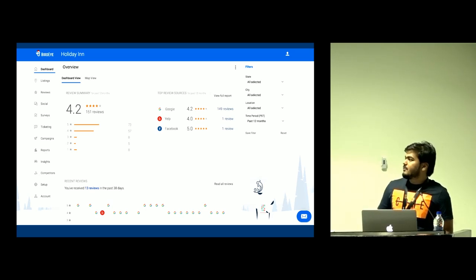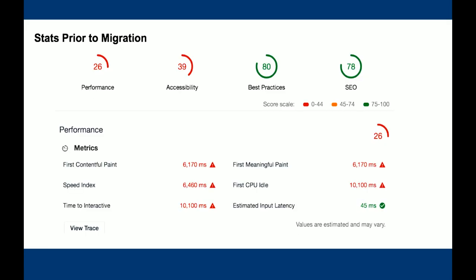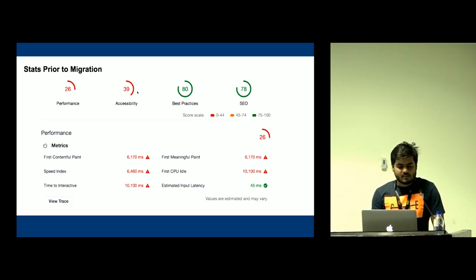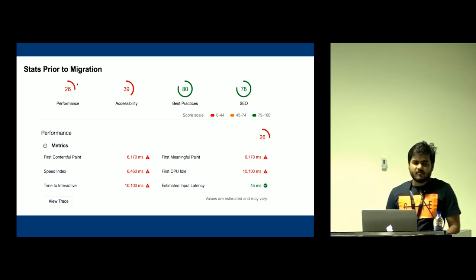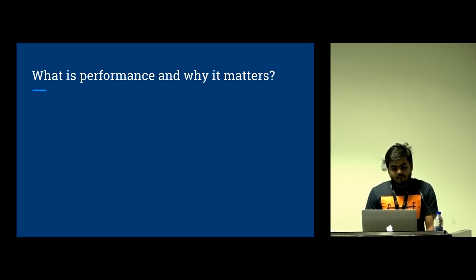This is the platform I work on — it's a very heavy JavaScript application with its own set of performance problems. It's like creating a complete desktop application on the web. Prior to migration, about six months back, our meaningful paint was around 6,000 milliseconds. Performance-wise we were down to 26 on Lighthouse metrics, and time to interactivity was going around 10,000 milliseconds. Then we tried to optimize.